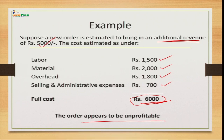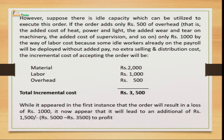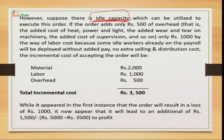Now let us continue further — suppose there is idle capacity. Every production house has a production capacity; sometimes they work below full capacity due to fewer orders. For example, if my capacity is 80,000 units per day but I only have orders for 50,000, then 30,000 units represent my idle capacity — capacity available but not currently utilized.